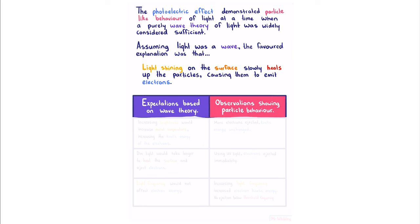Based on the wave theory of light, we would expect that increasing brightness would increase metal temperature and increase the kinetic energy of the electrons. In reality, more electrons were ejected and the kinetic energy was unchanged.